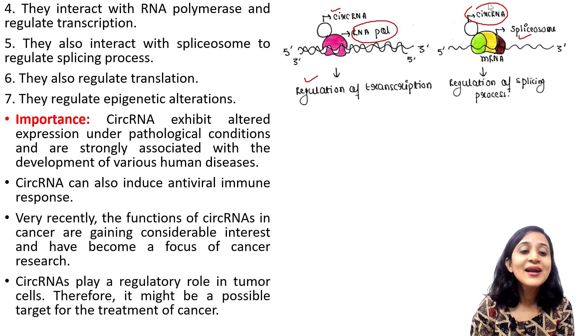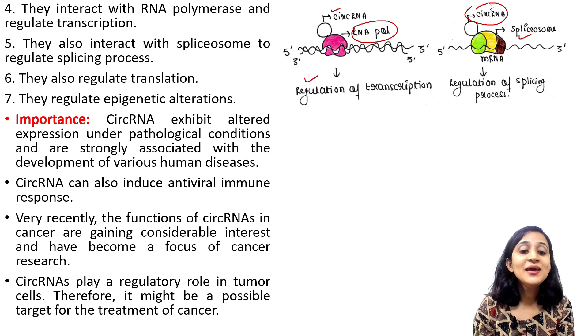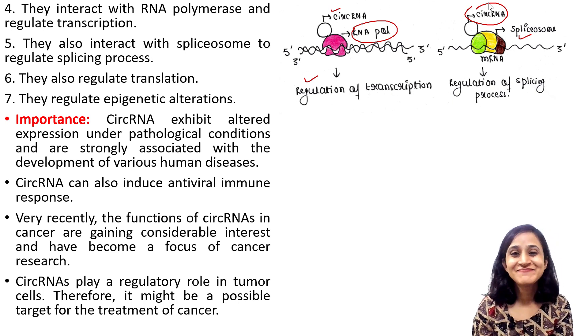Very recently, the functions of circular RNAs in cancer are gaining considerable interest and have become a focus of cancer research. Circular RNAs play a regulatory role in tumor cells. Therefore, it might be a possible target for the treatment of cancer.